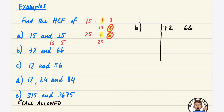It doesn't matter which way around you do those. I'm going to start finding the factors of both of them. They're definitely in the two times table, so I'll do 72 ÷ 2 = 36 and 66 ÷ 2 = 33.